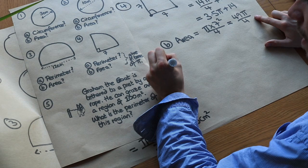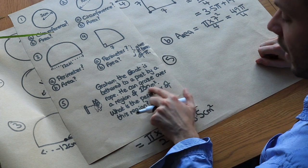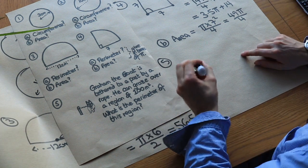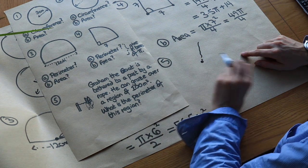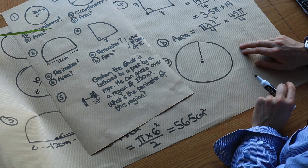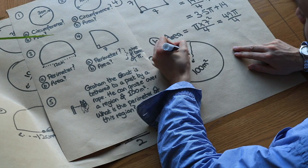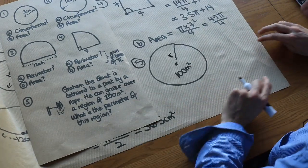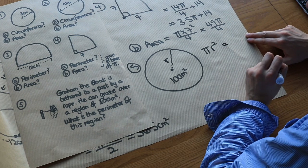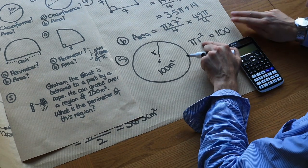Now we've got a final problem: Graham the goat is tethered to a post by a rope. He can graze over a region of 100 meters squared. What is the perimeter of this region? The goat is tied to a point, and with a rope of unknown length, he can move in a circle — so he grazes over a circular area. We're told the area is 100 meters squared, so we need to first find the radius. We know the area of a circle is πr², so πr² = 100.